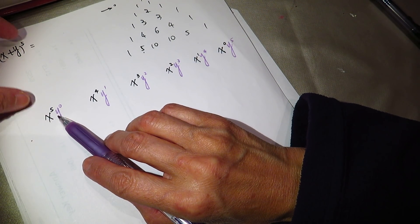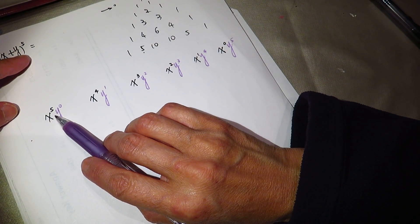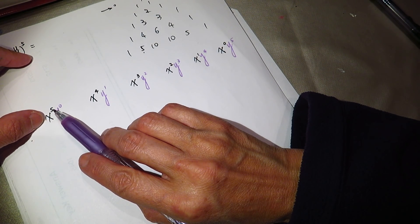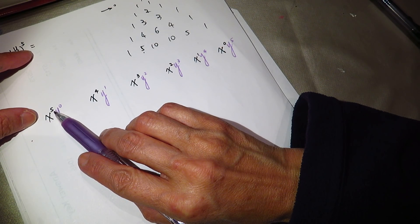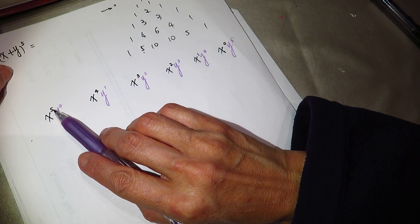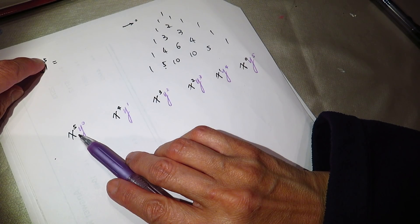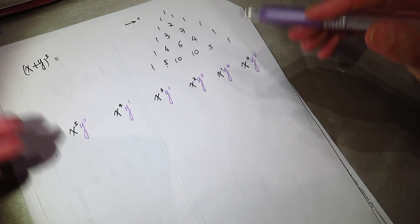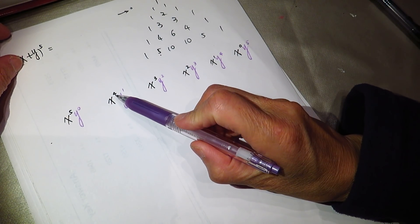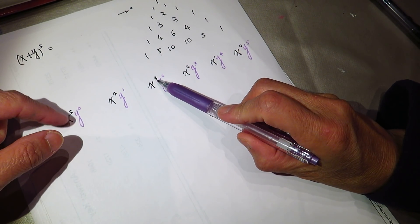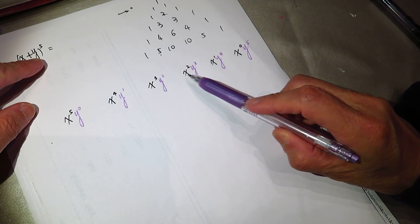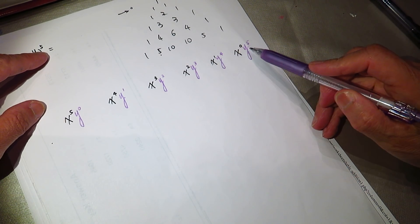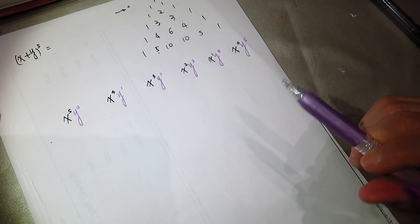Zero plus five is five. So, at the end of the day, the two powers add up together. The degree add up together should be the power of what we are multiplying. Four plus one is five, three plus two is five, you know it. Two plus three is five, one plus four is five, zero plus five is five.